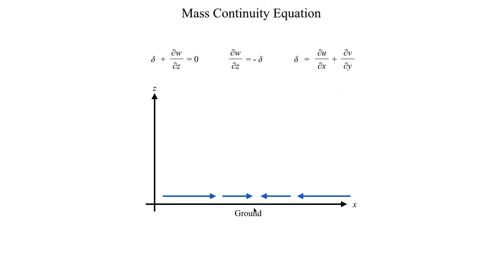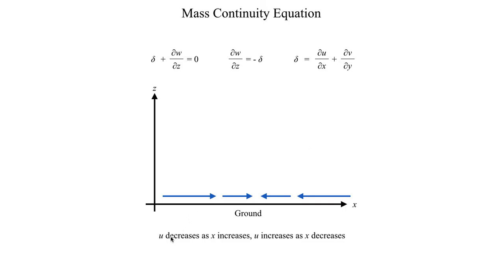As we go in the positive x direction, u is becoming more negative — it is becoming smaller. And as we go in the negative x direction, u is becoming bigger, more positive. So du/dx must be negative, because as x increases, u changes in the opposite direction. This means our horizontal divergence delta must be negative as well, which means we've got a convergent flow pattern. And just by looking at it, we can see we do in fact have convergent flow — all the wind is going towards a common point.